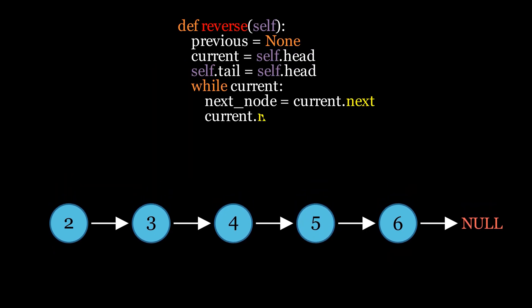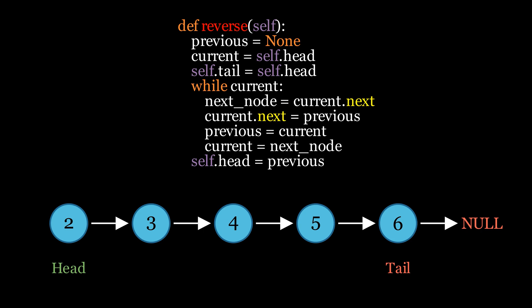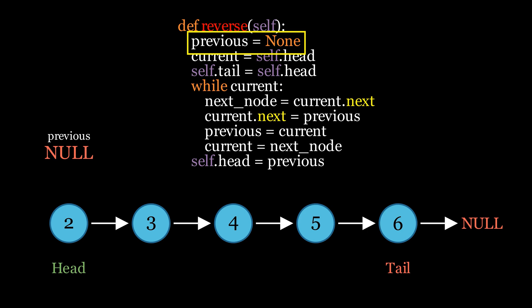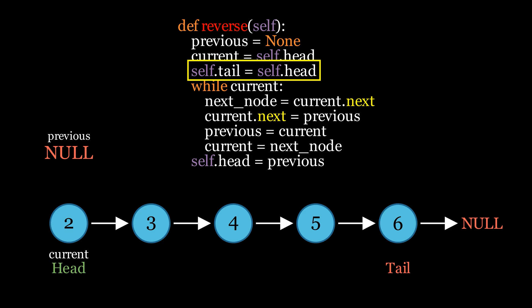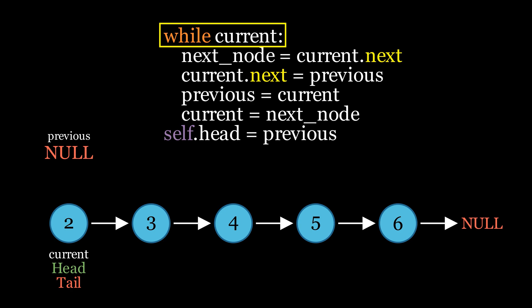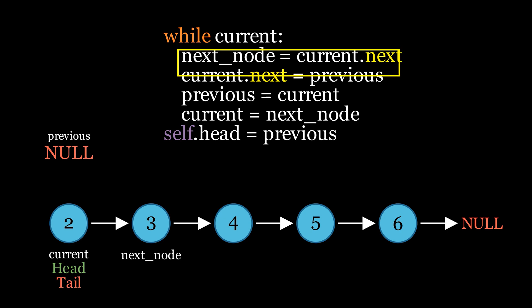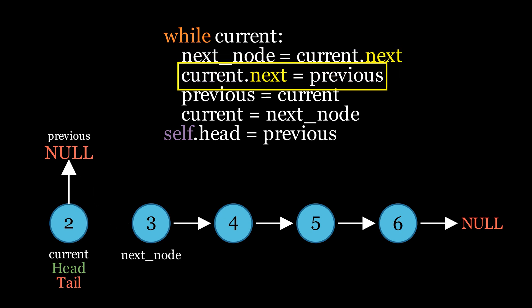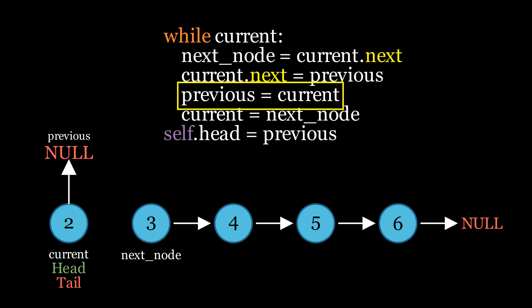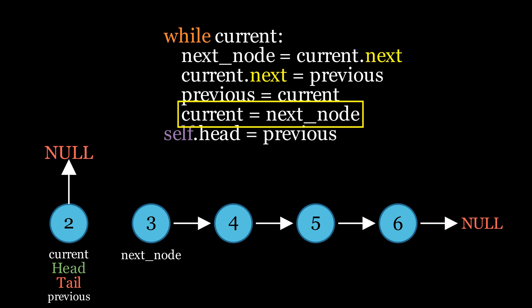The next operation is reversing the entire list. We define the function reverse. First, we create a variable called previous, initially set to None, and a variable called current assigned to the head of the list. The tail will be updated to become the head. Then, while current is not None, we assign next node to current.next to keep track of the next node, update current.next to point to previous — effectively reversing the link — then update previous to current, and move current to the next node. The loop continues until current becomes None.